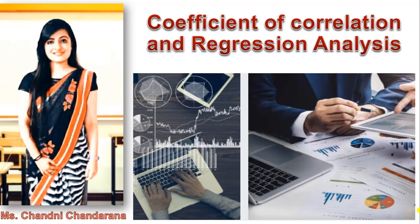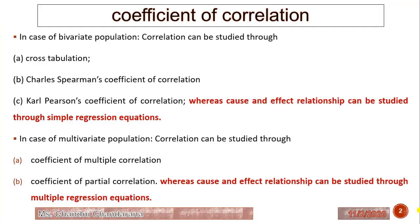Hello dear learners, today we will see coefficient of correlation and regression analysis in detail. In case of bivariate population, correlation can be studied through three processes: cross tabulation, Charles Spearman's coefficient of correlation, and Carl Pearson's coefficient of correlation.